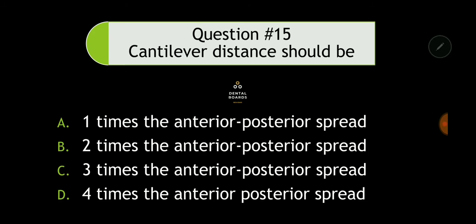Question 15: A cantilever distance should be how many times the length of the anterior-posterior spread? Is it one, two, three, or four times? The cantilever distance of the prosthesis should be two times the anterior-posterior distance. The answer is B. You need to know the principles of cantilever and anterior-posterior spread for implants.